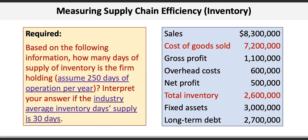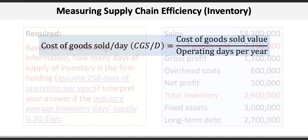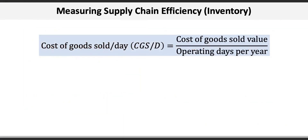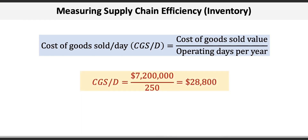Before we can calculate inventory day supply, we must first calculate the cost of goods sold per day, which is the cost of goods sold divided by the number of operating days per year. Here we take 7.2 million in cost of goods sold and divide by 250 operating days to get 28,800 cost of goods sold per day.